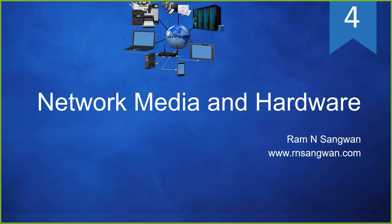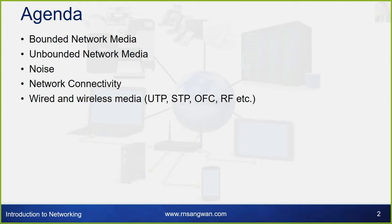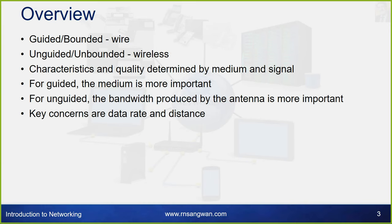Network media and hardware, session 4. The agenda covers bounded network media, unbounded network media, noise, and network connectivity — wire and wireless media including UTP, STP, OFC, and others. In this session, you will learn about different types of media used for networking. Guided and bounded means wired; unguided and unbounded means wireless.